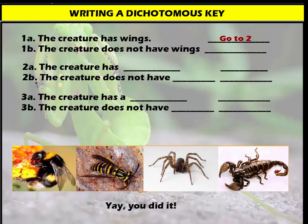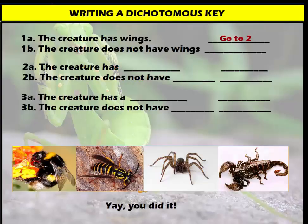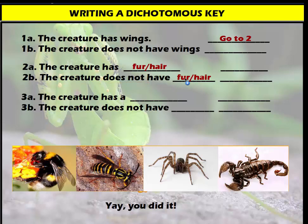Our second question was does the creature have fur or hair? We use that as the deciding factor for couplet 2. Statement 2a reads: the creature has fur and hair. The second part of the couplet is always the opposite — 2b reads: the creature does not have fur or hair.